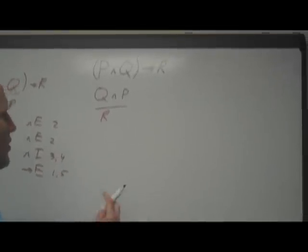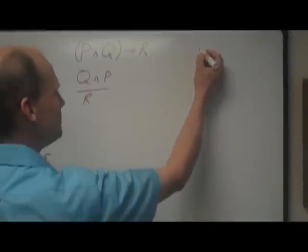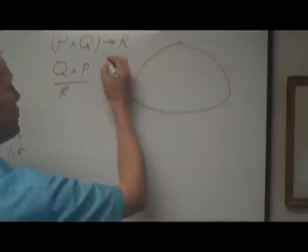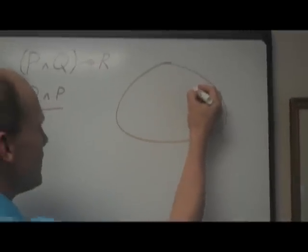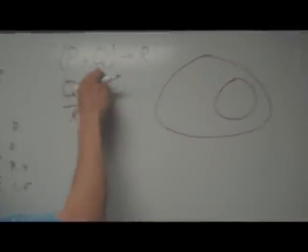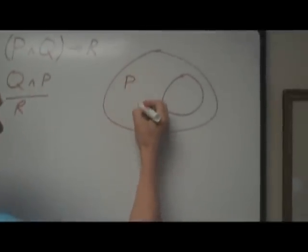Okay, so now in the graphical notation, we would represent this graphically. And this statement, if P and Q then R, becomes something like this.